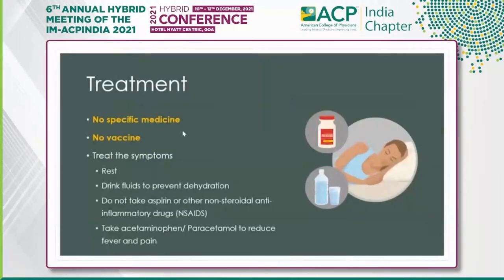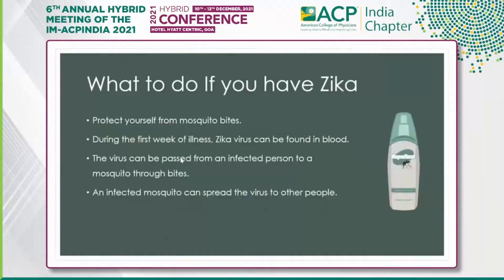Like dengue fever and chikungunya, Zika is a viral illness with rash. There is no specific treatment and no vaccine. Treatment is mainly symptomatic: rest, drinking plenty of fluids with electrolytes. Aspirin and other NSAIDs should not be taken. Only acetaminophen (paracetamol) is recommended for managing fever, myalgia, and joint pain.